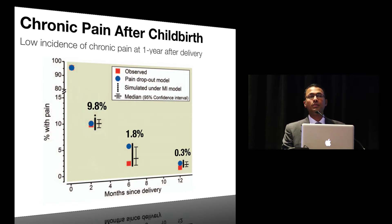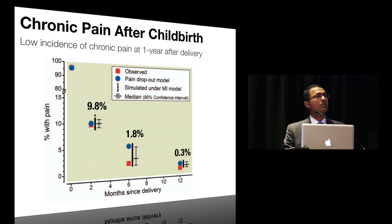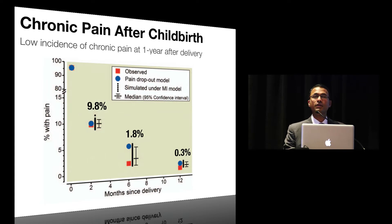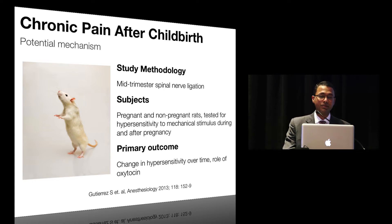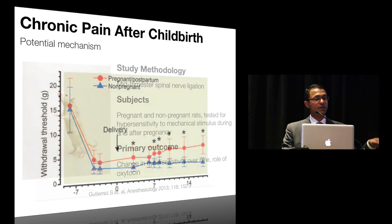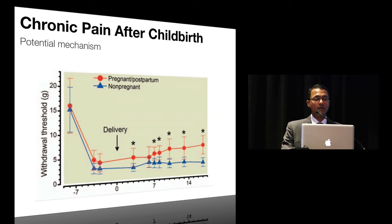For some reason, pregnant women seem to behave differently from other surgical populations — there is something protective. Either the tissue trauma is not sufficient to trigger a chronic pain response, or there could be biological factors that make pregnant women in the postpartum period less susceptible to chronic pain. To investigate this phenomenon, the researchers also published a study using a rat pain model with mid-trimester spinal nerve ligation in both pregnant and non-pregnant rats, testing for hypersensitivity to mechanical stimulus during and after pregnancy.